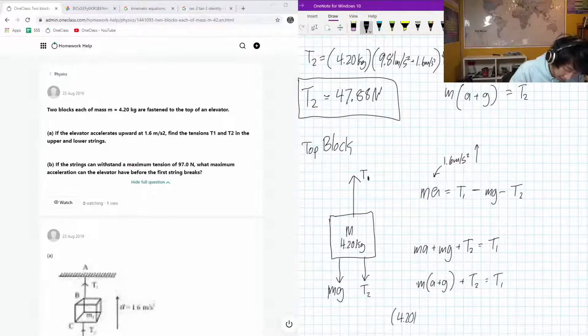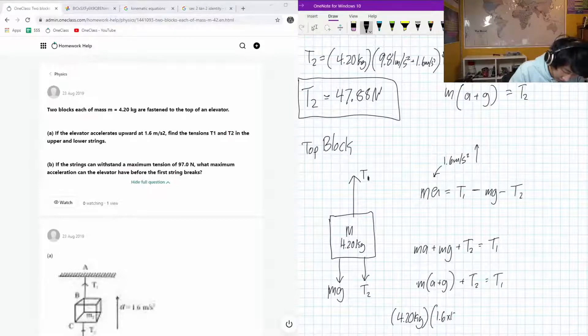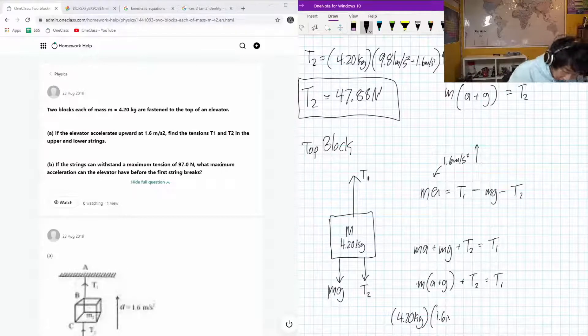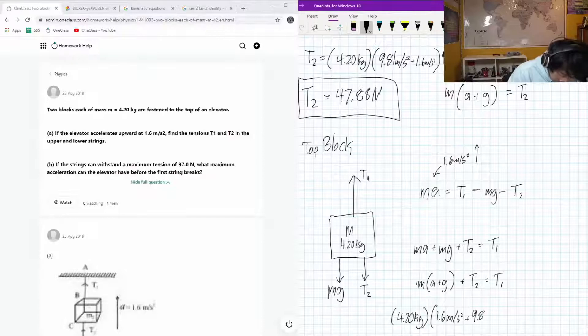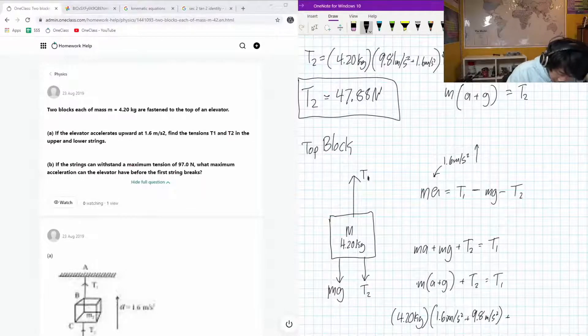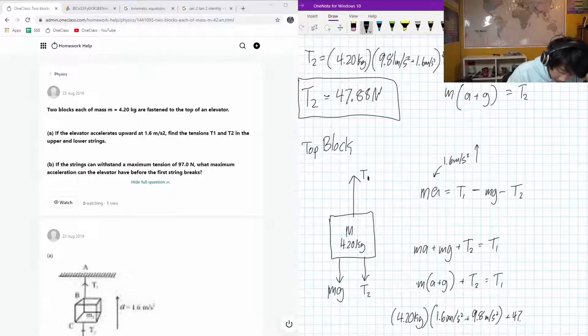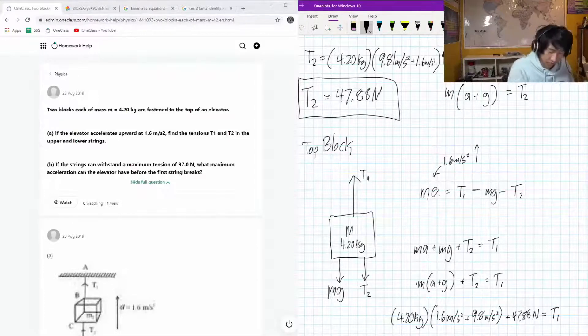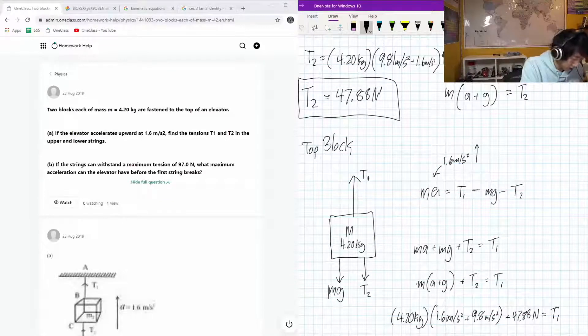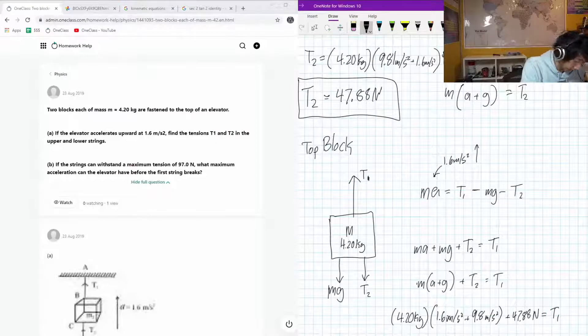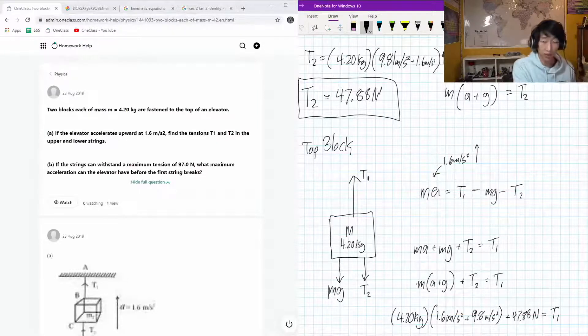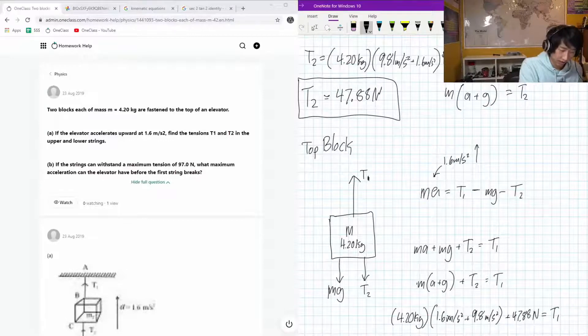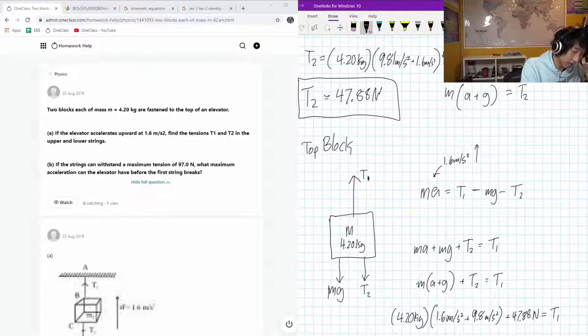And let's sub in our numbers. We know our mass is going to be 4.20 kilograms. Our acceleration upwards, 1.6 meters per second squared plus 9.8 meters per second squared plus T2, and T2 is 47.88 newtons. And that's equal to T1. And I have a feeling that this is just going to be double the last one. Yeah, it actually just is double the last one. That makes sense. The top one is supporting double the weight. It's supporting two identical blocks, and the lower one is only supporting one of the blocks.